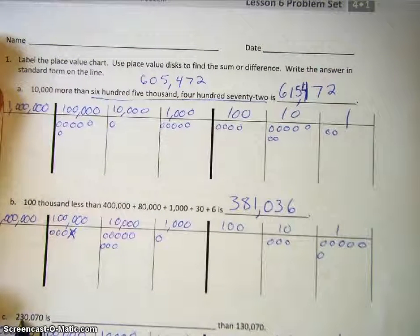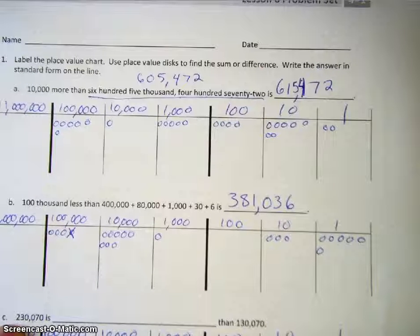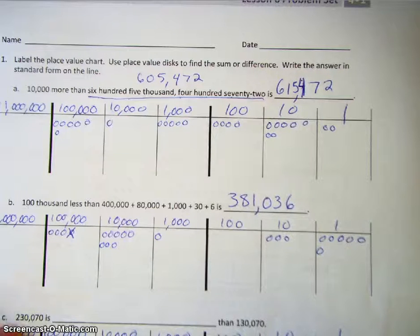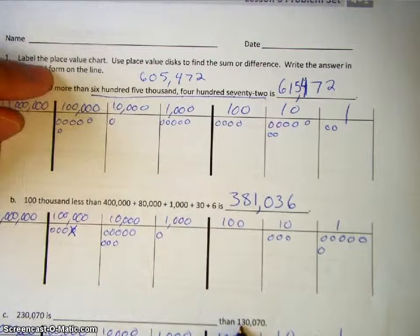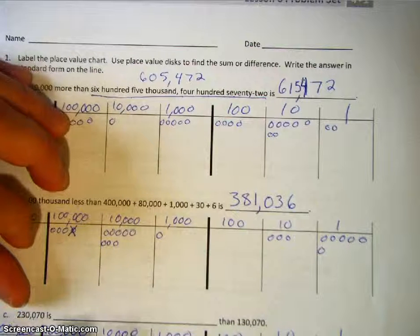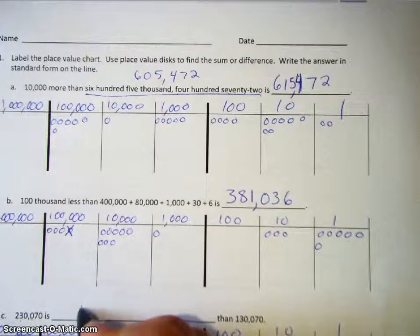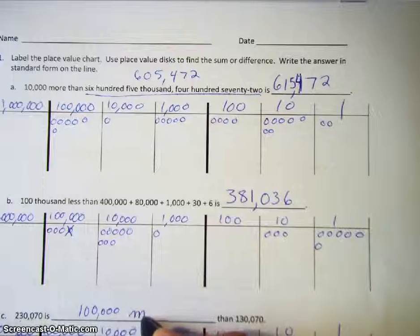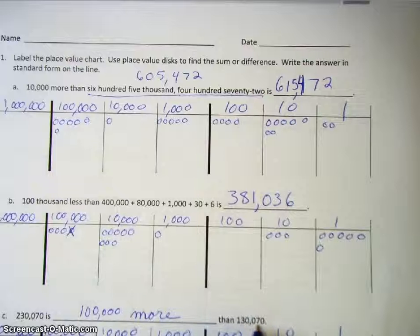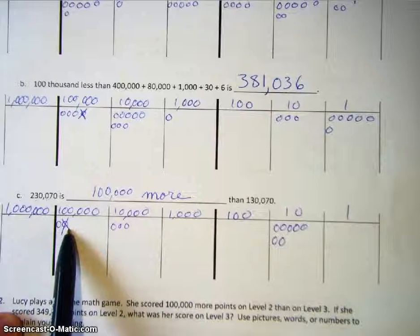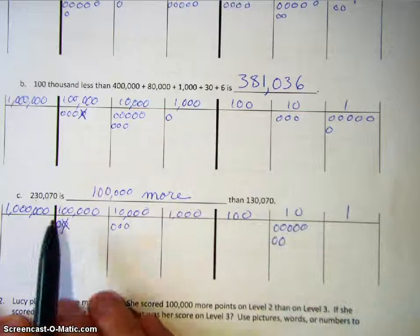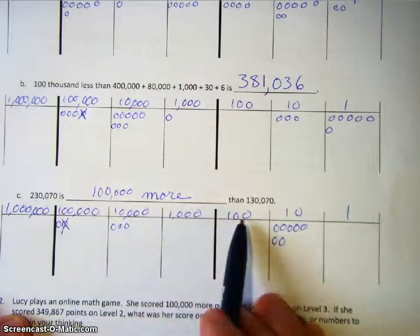Now we're given the first number and the ending number, and we need to find out what we need to do to get to that final number. We set up the first number: 200,000 plus 3 ten-thousands plus 7,070. We need to get from this number to 130,070. The only place that changes is the 100,000s space — we're going from 200,000 to 100,000, which means we're crossing the line. So this number is 100,000 more than 130,070, and it's larger by 100,000 because that's what we crossed out.